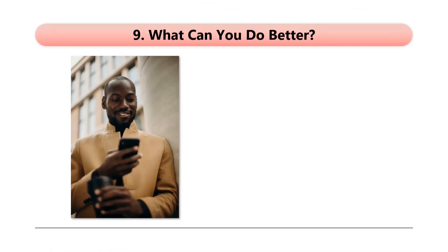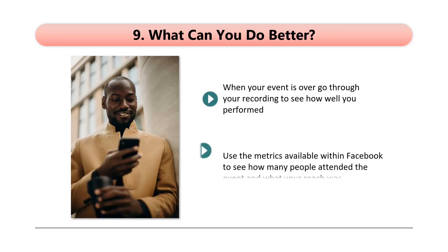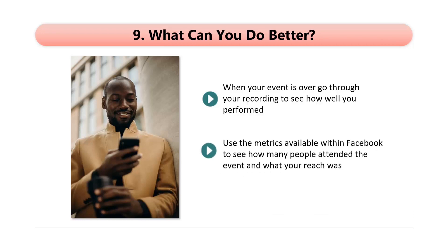Nine: what can you do better? When your event is over, go through the recording to see how well you performed. Did you come across in a friendly way? What mistakes did you make? Did anything go wrong? You can always do things better next time. Use metrics available within Facebook to see how many people attended and what your reach was. Facebook has a lot of insightful metrics — learn about all of them and use them regularly after your events.